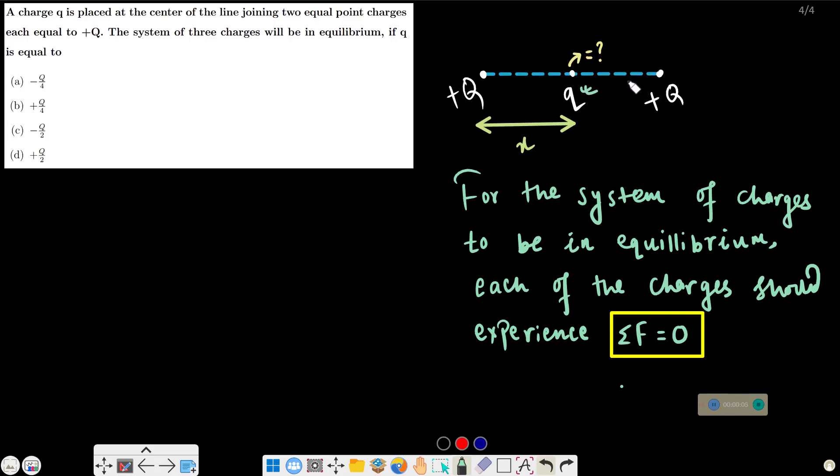This system of three charges, this small q, will have a value such that these three charges will be in equilibrium. Charges in equilibrium means all charges will be in equilibrium. Each of the charges will experience zero net force.